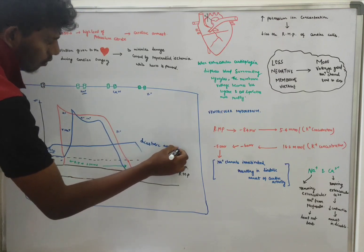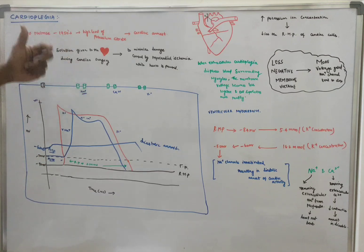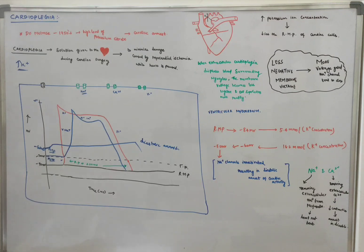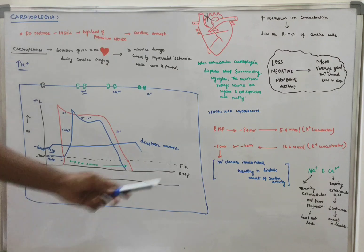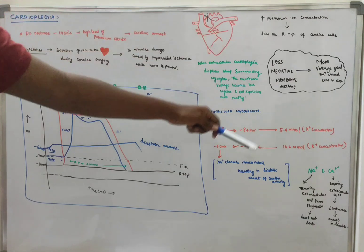If we perform diastolic arrest rather than systolic arrest, we avoid increased calcium in the heart. With systolic arrest, intracellular calcium would increase, leading to cross-bridge formation. So we prefer diastolic arrest. The potassium ion concentration causes diastolic arrest. That is the concept of increasing potassium ion concentration.